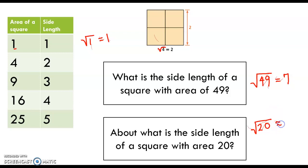Thinking about numbers that do have nice square roots, like 16 and 25, I know that 20 is going to be somewhere between 4 and 5. I'm just guessing about 4.3, but that's totally a guess. Your responsibility will be to identify between which two whole numbers the square root would be — so it'd be between 4 and 5.